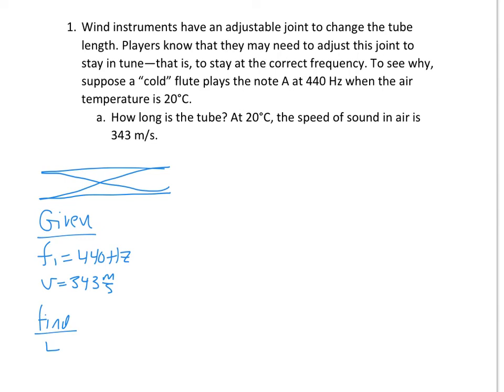And we're looking for the length of the tube. So this is open-open. We know that F1 equals MV over 2L. M is 1. So rearranging, we get L equals MV over 2F.